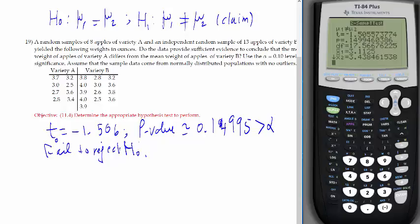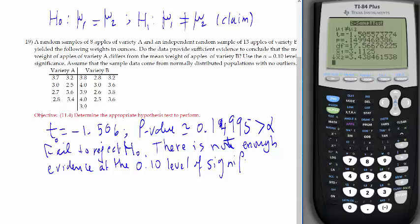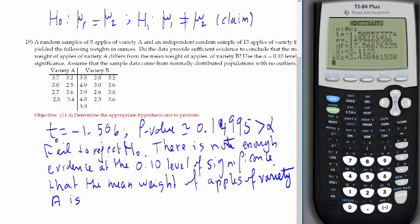And let's make a conclusion here. There is not enough evidence at the 0.10 level of significance that the mean weight of apples of variety A is different from that of B.